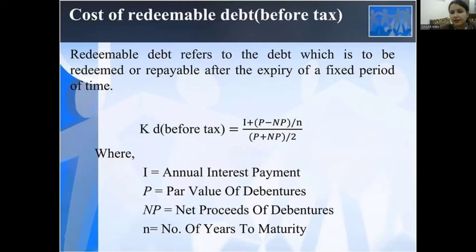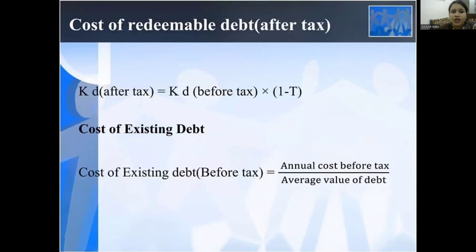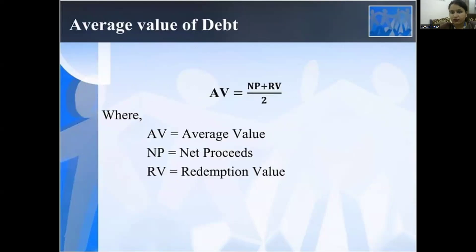Cost of redeemable debt before tax: redeemable debt refers to debt which is redeemed or repayable after the expiry of a fixed period of time. KD before tax equals I plus (P minus NP) divided by N, all divided by (P plus NP) divided by 2. Where I is the annual interest payment, P is the par value of the debentures, NP is the net proceeds, and N is the number of years to maturity. Cost of redeemable debt after tax: KD after tax equals KD before tax multiplied by (1 minus T). Cost of existing debt before tax equals annual cost before tax divided by average value of debt, where average value AV equals (NP plus RV) divided by 2, and RV is the redeemable or redemption value.